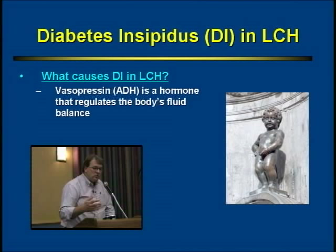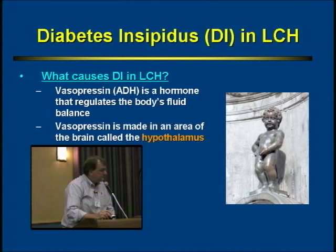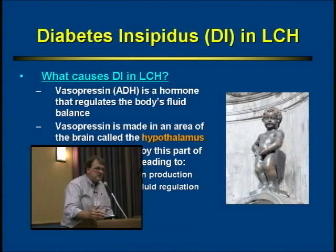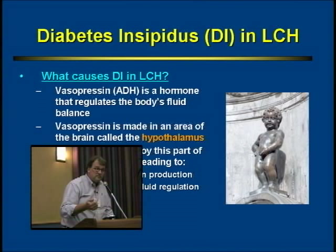What we do know is that there is a hormone in your body that regulates fluid balance, called vasopressin or ADH. It's made in an area of the brain called the hypothalamus. In LCH, the LCH cells can go to that part of the brain and destroy that part of the hypothalamus, so that one is then not able to make vasopressin. Your body doesn't have enough vasopressin, and that signal the body uses to hold on to fluid is gone.